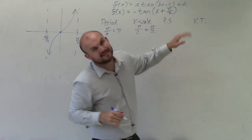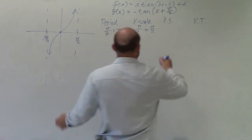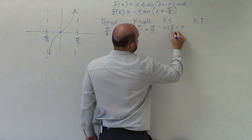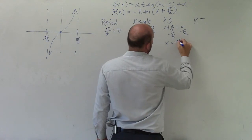Our phase shift is going to be what's inside of our function. And we just set it equal to 0 and solve for x. So that's going to be x plus pi halves equal to 0. So subtract pi halves. x equals negative pi halves.